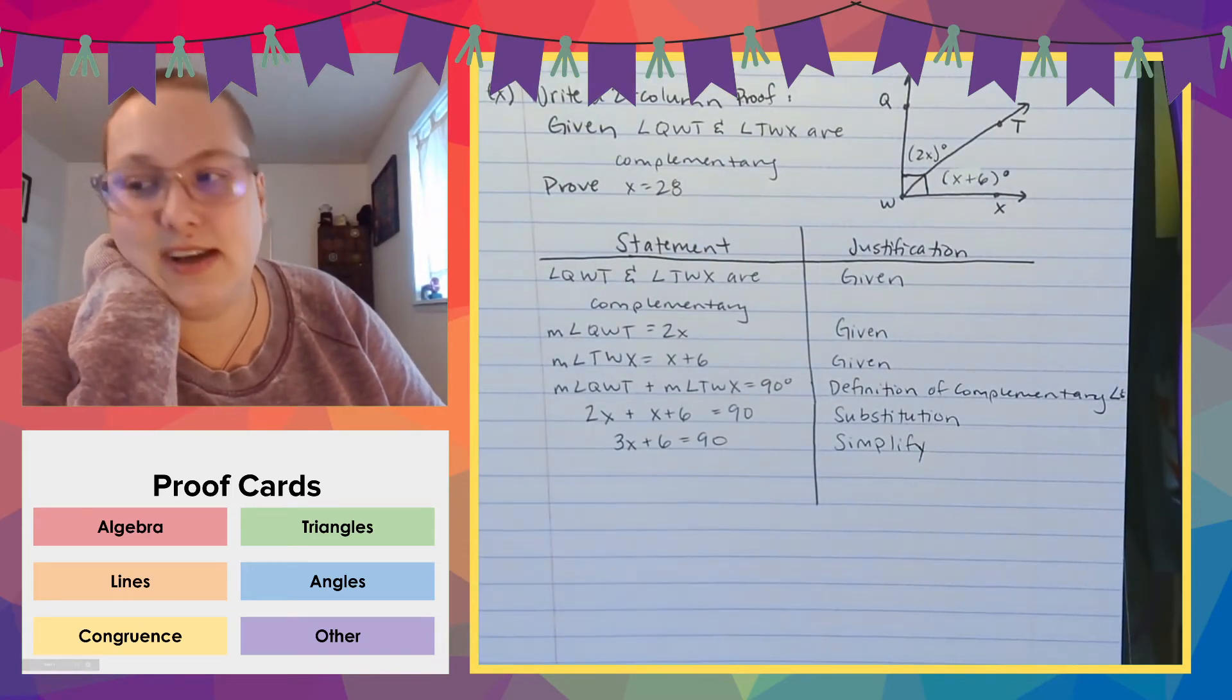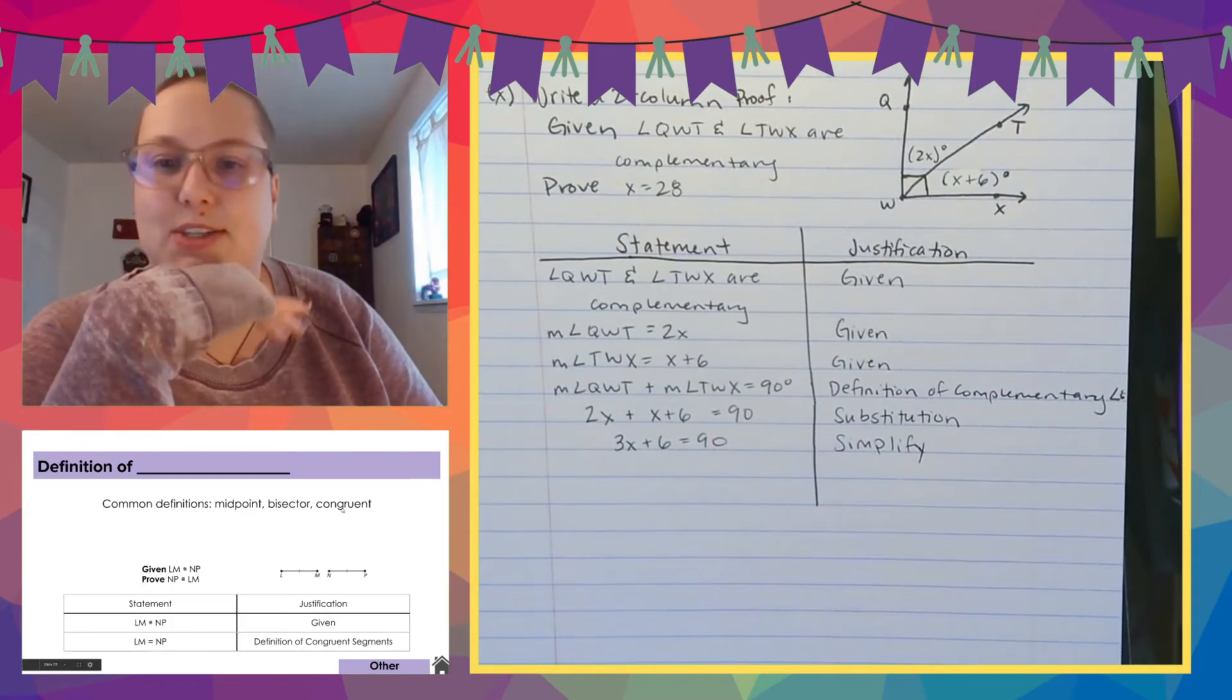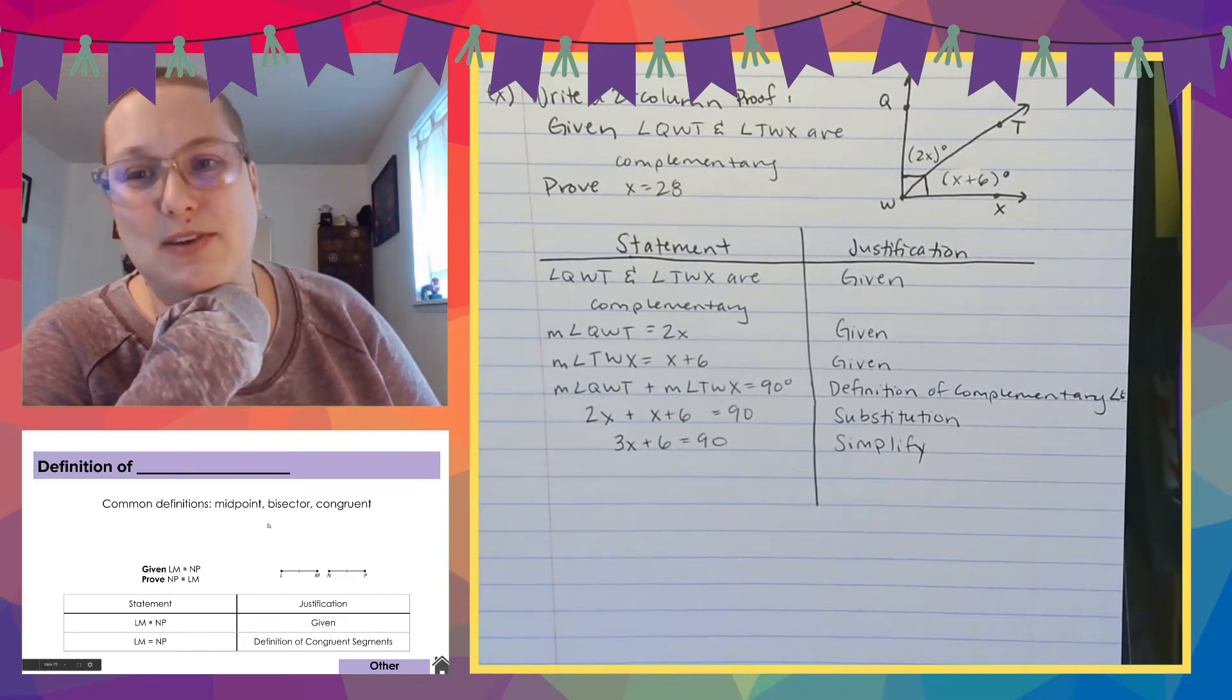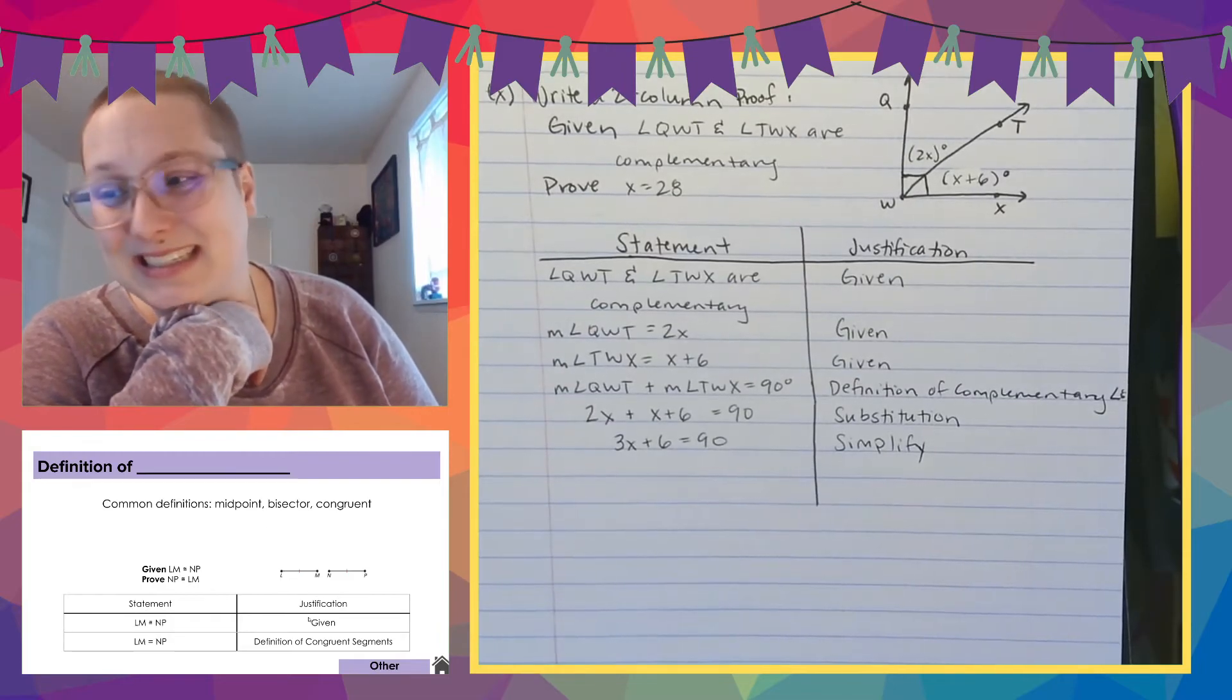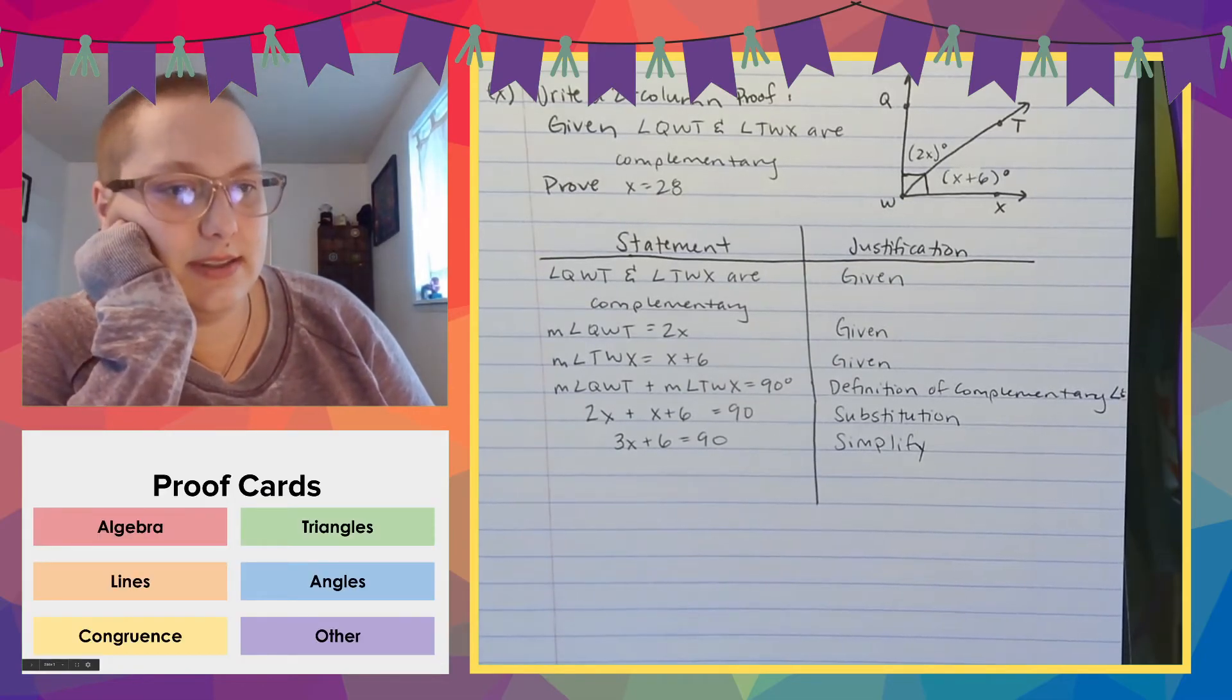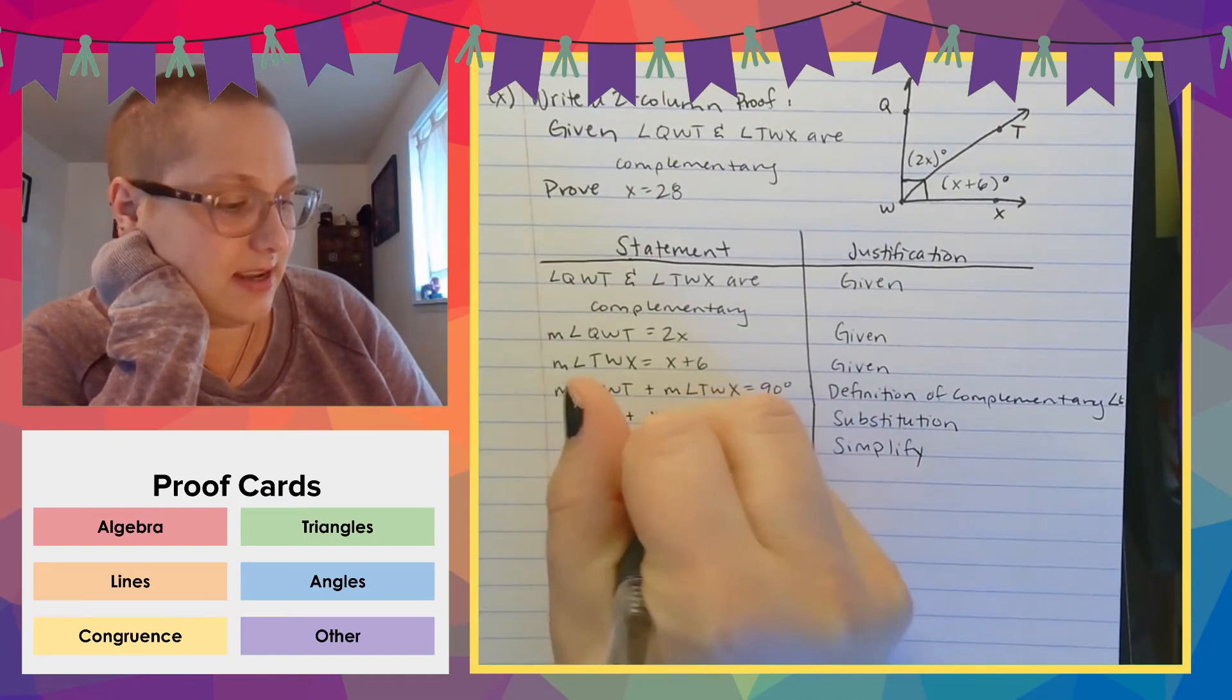And then just as a reminder, you can go back and look at these cards. Definition isn't in angles, it's in other. So midpoint bisector congruent. Those are common ones. Complementary is one of them. Supplementary is one of them. I hate this list because I wish I could give you all of the things that we could say it was a definition, but I really can't. I can't use them all. I know. I'm sorry.